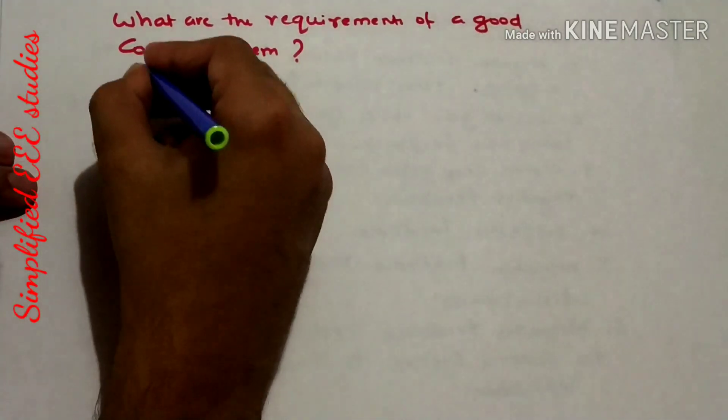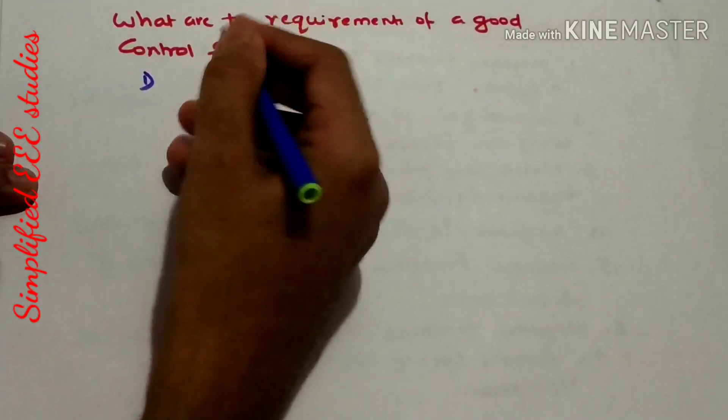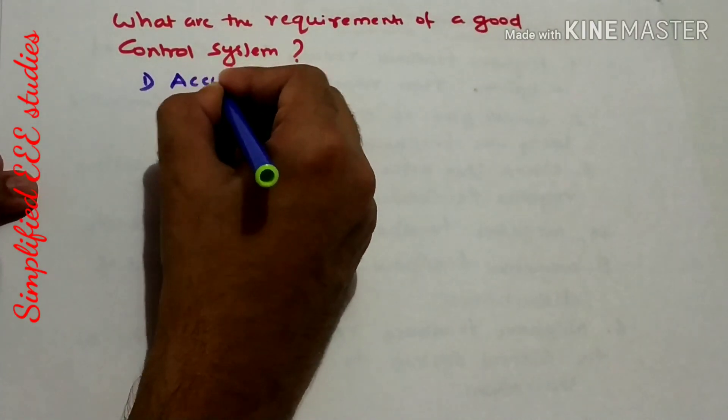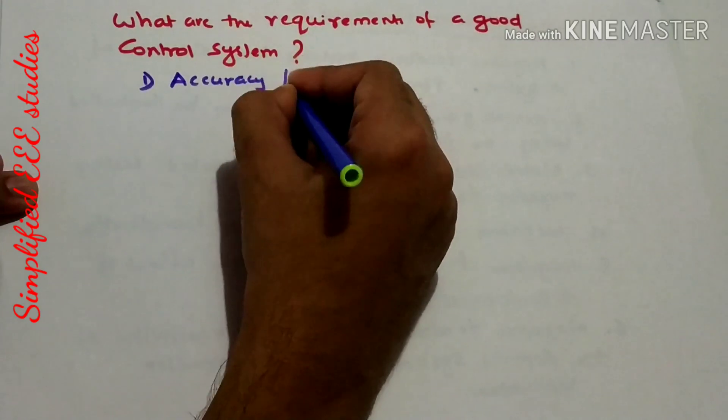One of the questions you can list out the following points. First one, a good control system should maintain high accuracy. Accuracy is most important.